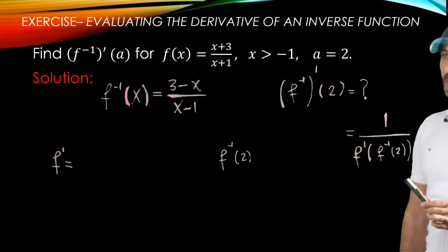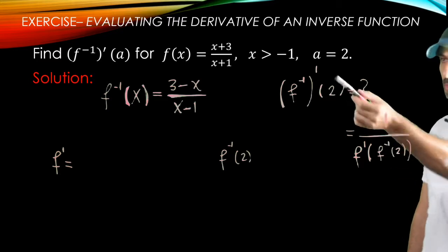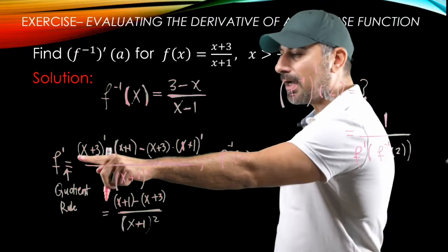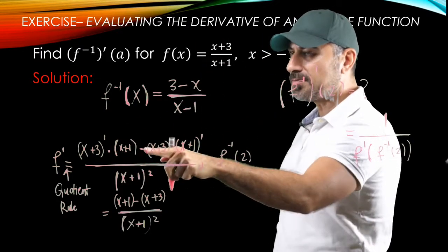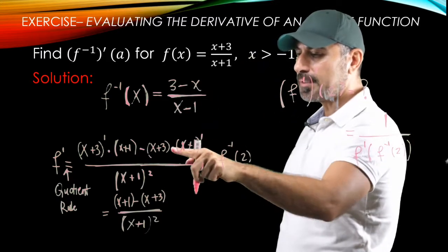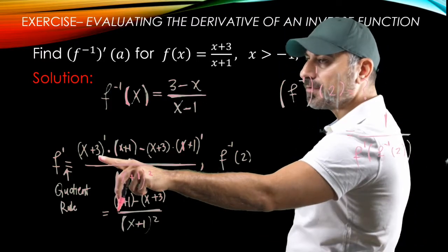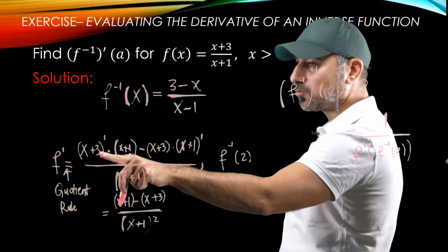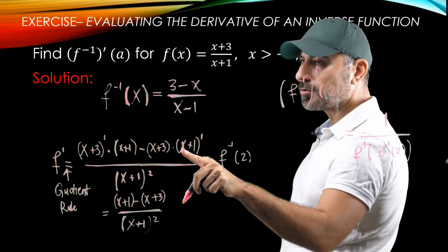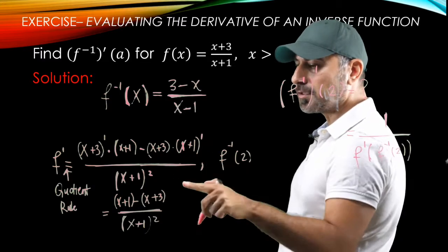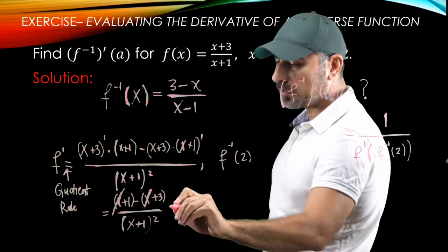To find f prime, we use the quotient rule since we have a quotient of two functions. The derivative is: the derivative of the top (x+3), which is 1, times the bottom (x+1), minus the top (x+3) times the derivative of the bottom, which is also 1, all divided by (x+1) squared. The x terms cancel, giving us f prime.